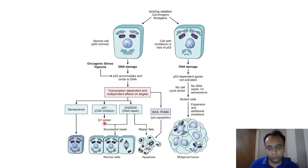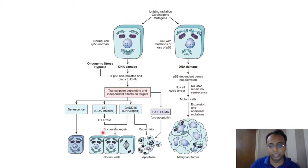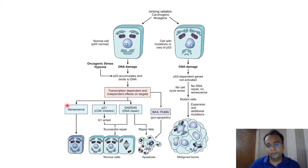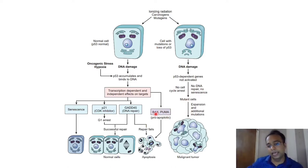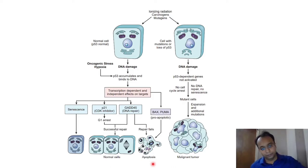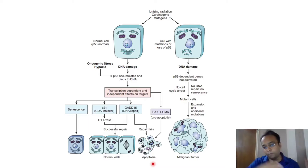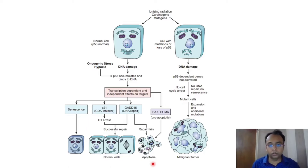This image from Robbins' textbook demonstrates p53 activity. In a normal cell with p53, when exposed to radiation, carcinogens, or mutations causing DNA damage, p53 accumulates, binds to DNA, and induces GADD45 for DNA repair. Simultaneously, p53 induces p21 protein — a cell cycle inhibitor — to cause G1 arrest, giving the cell time for repair. If repair fails, p53 induces BAX and PUMA proteins, which activate the intrinsic apoptosis pathway to remove the abnormal cell. Without p53, there is no repair, no apoptosis, no senescence, and mutated cells can proliferate and cause cancer.